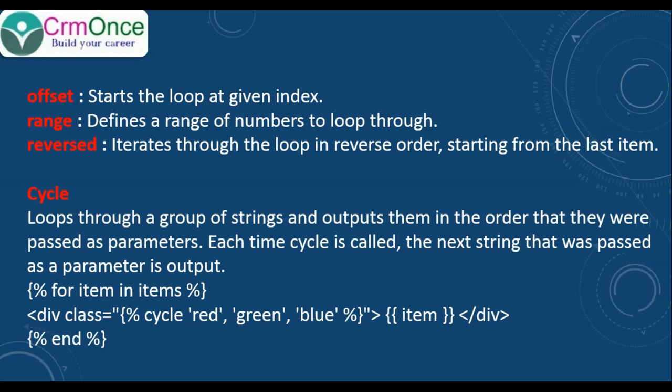That is one of the tags we have in the iteration - the for tag. Next one we have is cycle tag. Cycle means it loops through a group of strings and outputs them in that order.